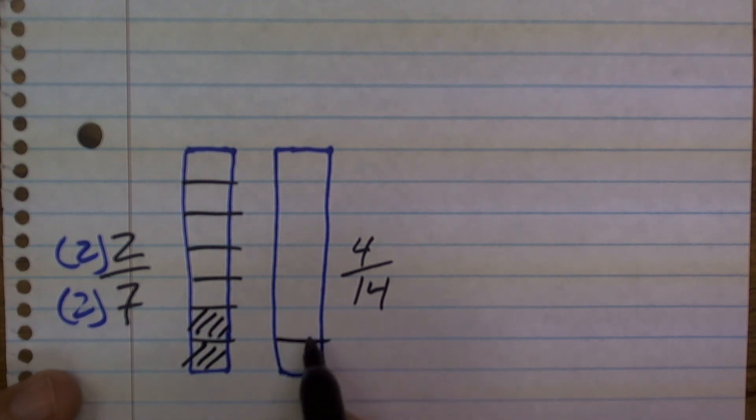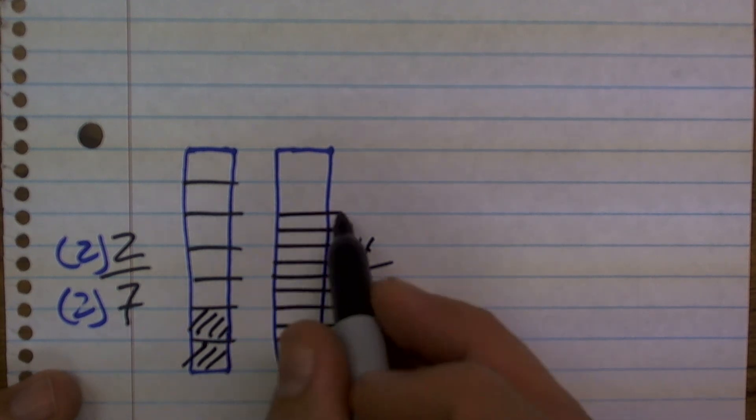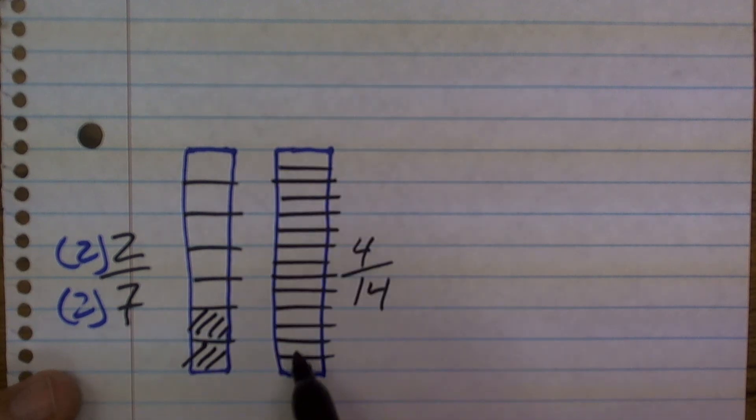Well, 4/14 is now going to be broken up into 14 sections, which you can kind of count here as I write them in. And to select 4 of them, 1, 2, 3, 4.